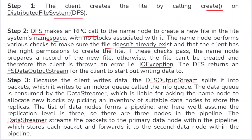For writing data, we use the FSDataOutputStream — remember, for writing we need FSDataOutputStream, but for reading we need FSDataInputStream. The client writes data, and the DFS output stream splits it into packets. These packets are written into an internal queue called the data queue. The data queue is consumed by the data streamer, which asks the name node to allocate new blocks by picking suitable data nodes from inventory to store the replicas.